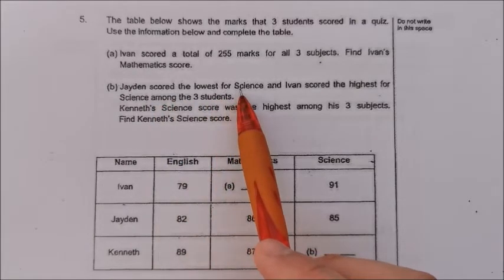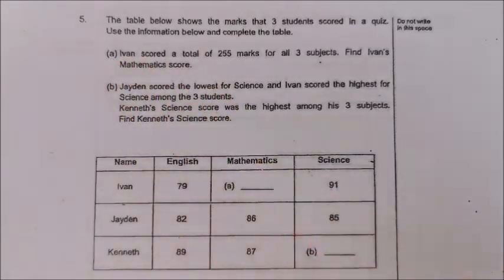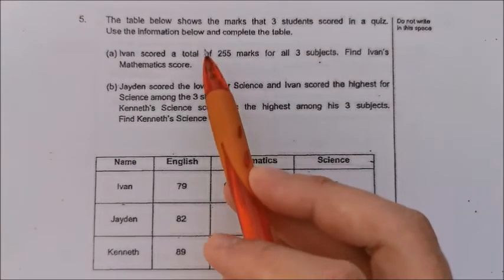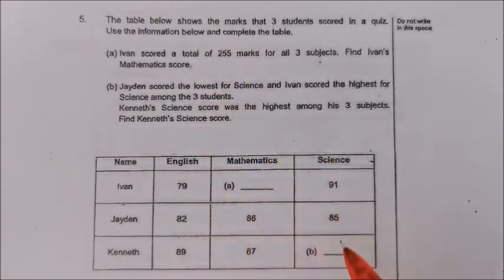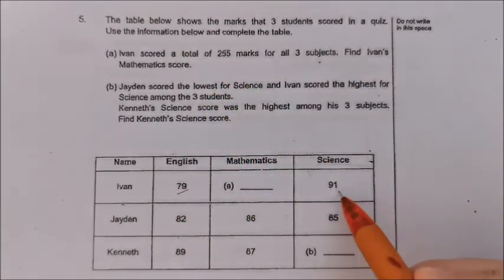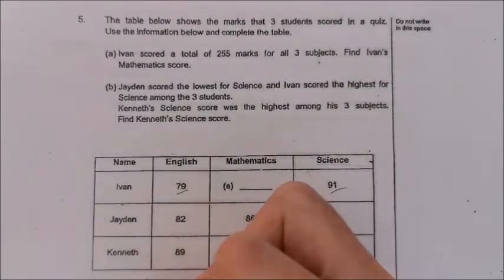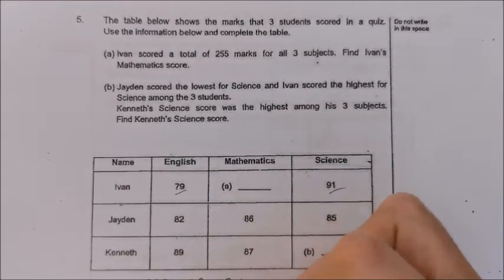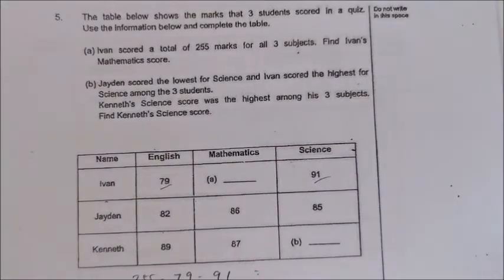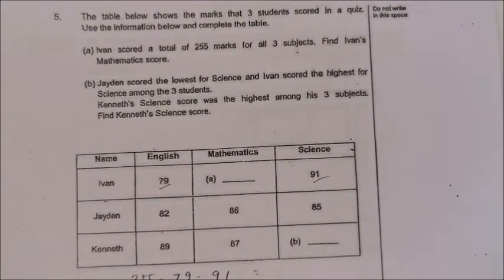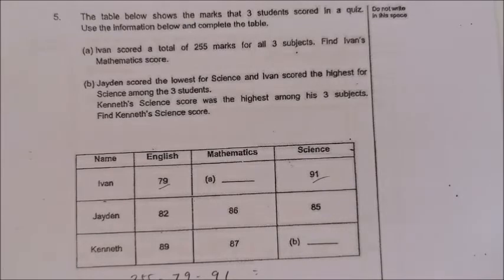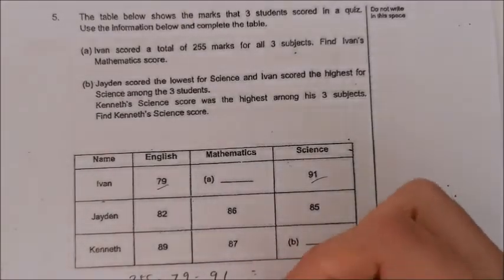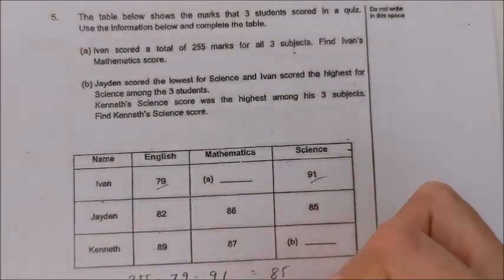Jayden scored the lowest. Never mind, we do A first. So Ivan had a total of 255. Okay, so the English is 79, science is 91. So what we do is 255 minus 79 minus 91, which equals 85 marks.